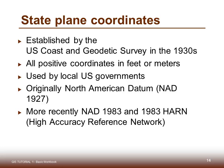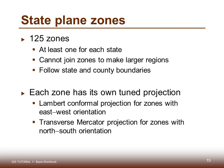State plane coordinates were established by the U.S. Coast Guard and Geodetic Survey in the 1930s. All values are positive in feet or meters, used by local U.S. governments — originally in the North American Datum of 1927, and more recently in 1983 or 1983 HARN (High Accuracy Reference Network) coordinates. There are 125 state plane zones, at least one for each state. Zones cannot be joined together; they follow state and county boundaries, and each zone has its own tuned projection. Lambert conformal projections are used for east-west oriented zones, and transverse Mercator projections for north-south oriented zones.